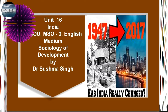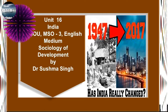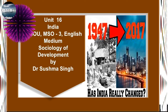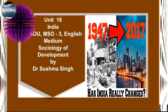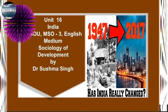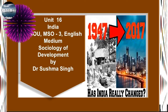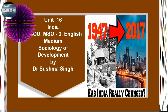Second Five-Year Plan, 1956–1961. In 1954, Parliament declared that economic policy should achieve a socialistic pattern of society, with greater equality in income and wealth. The main aim of the second plan was, therefore, to promote a pattern of development which could lead to the establishment of a socialistic pattern of society in India. The second plan was aimed at an increase of 25% in national income, rapid industrialization with particular emphasis on the development of basic and heavy industries, large expansion of employment opportunities, and reduction of inequalities in income and wealth, and a more even distribution of economic power.